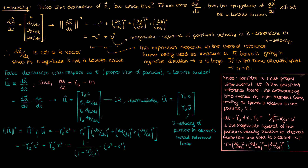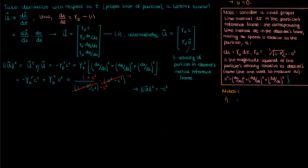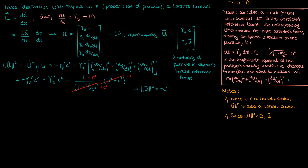If we plug in gamma squared as 1 over (1 minus v²/c²), take that common, then multiply numerator and denominator by c squared and cancel, we get negative c squared as the magnitude squared of our four velocity. This means the magnitude of the four velocity is a Lorentz scalar — the speed of light is invariant by the second postulate of special relativity, so c squared is also a Lorentz scalar. Additionally, the magnitude squared being negative makes this a time-like four vector. Time-like four vectors have negative magnitude squared, space-like have positive, and light-like have zero.